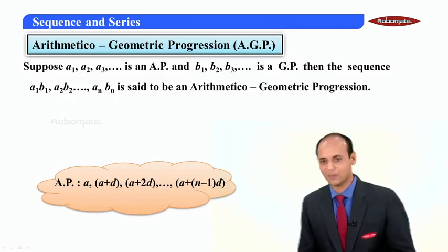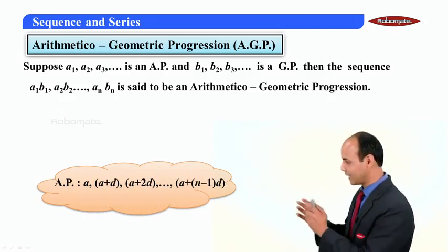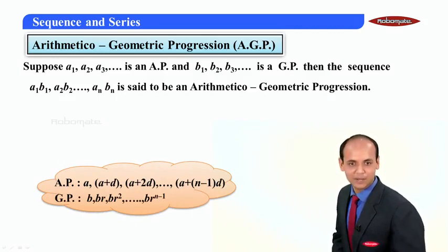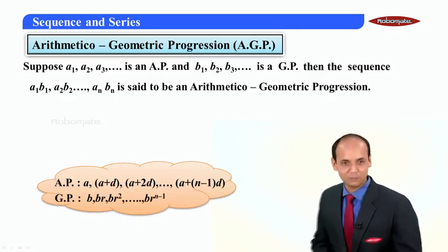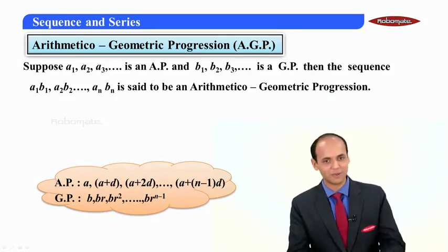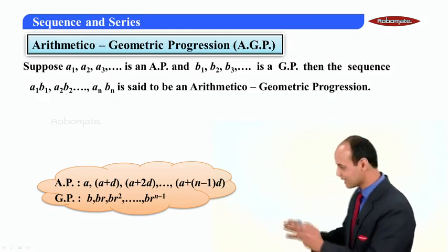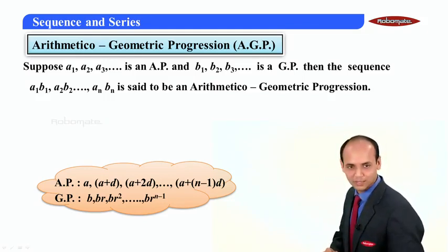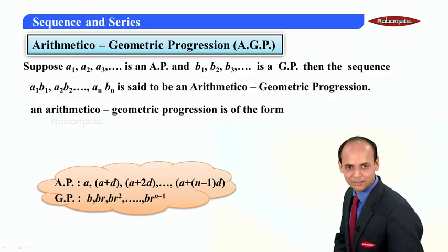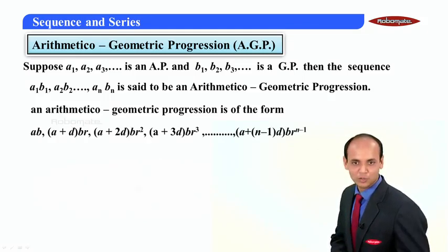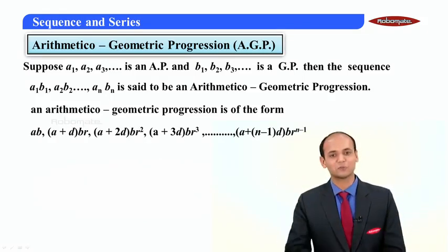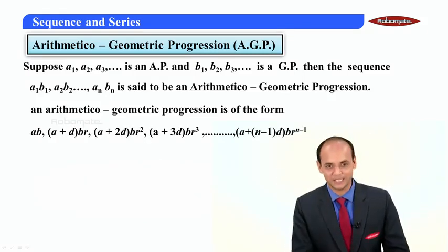Let us say the AP is given as A, A+D, A+2D and so on, and a GP is given as B, BR, BR² till BR^(n-1). Then multiplying the corresponding terms of these two sequences will give a sequence which would be an AGP.